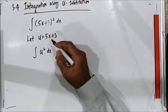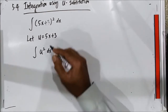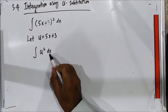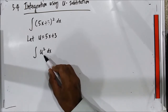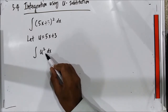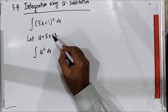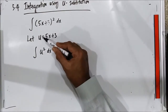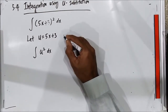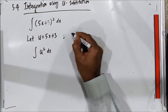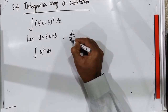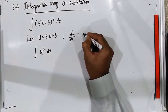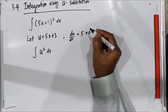If we integrate this function with respect to x, we get u raised to 2. But if you change this in terms of u, dx will have to change in terms of du. So, to find dx in terms of du, I differentiate: du/dx is equal to 5 plus 0.